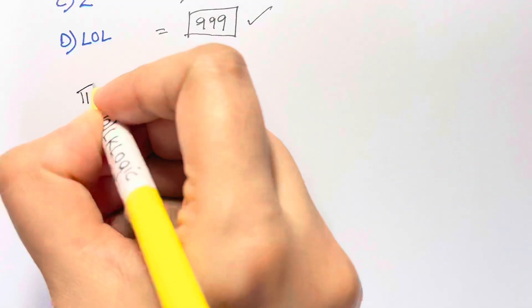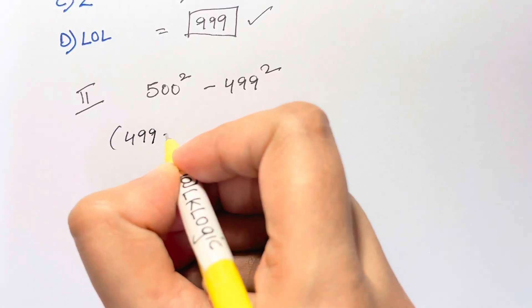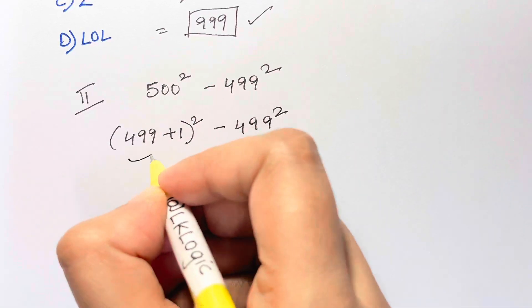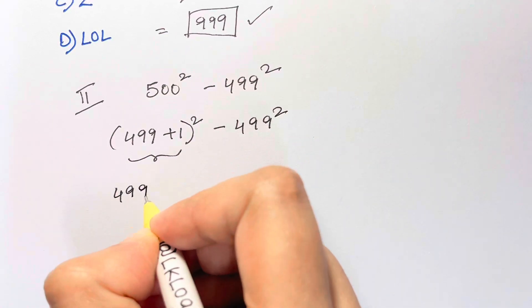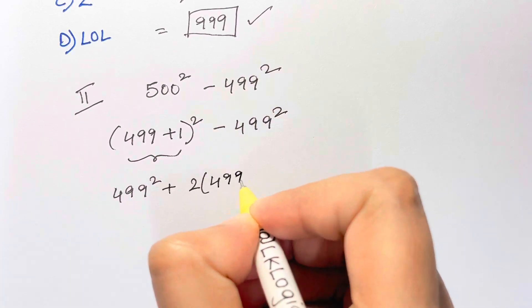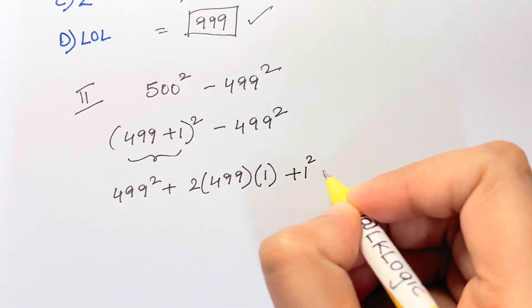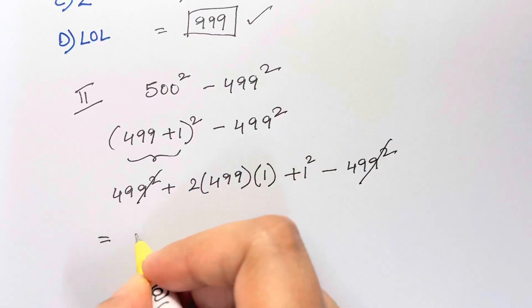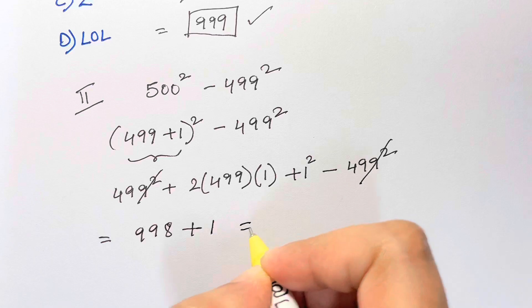The other method is we take 500² as 499 plus 1 the whole square. Here we expand (a+b)², so 499² plus 2 times 499 times 1 plus 1² minus 499². The 499² gets cancelled out, so we're left with 2 times 499, that's 998, plus 1, which gives you 999.